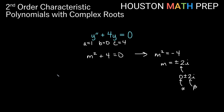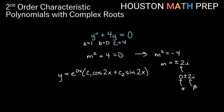With alpha equal to 0, our solution is y equals e to the 0x times c1 cosine of 2x plus c2 sine of 2x. Since e to the 0x is just 1, we simplify to y equals c1 cosine of 2x plus c2 sine of 2x.